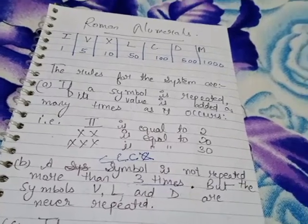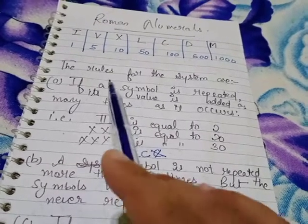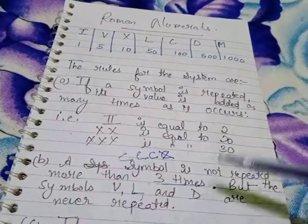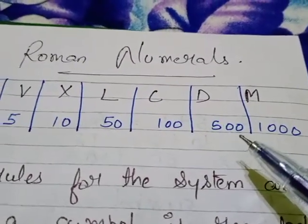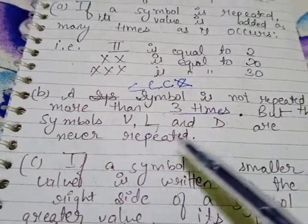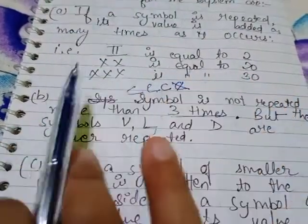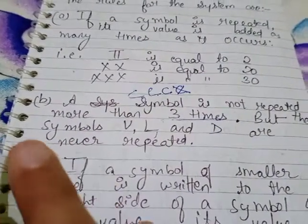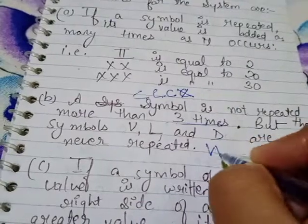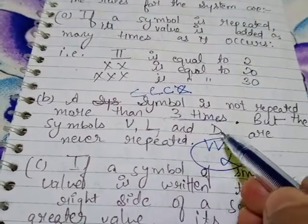Now, symbols V, L, and D — V means 5, L means 50, and D means 500. These three symbols can never be written more than once. We can write V only for 5, L only for 50, and D only for 500. We cannot write VV; that would be called 10, which is not allowed. These symbols cannot be repeated at all.